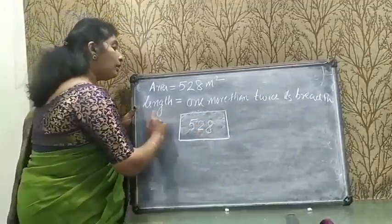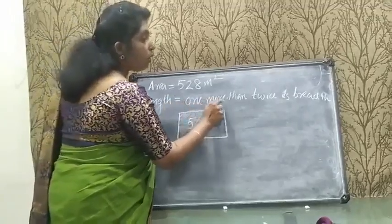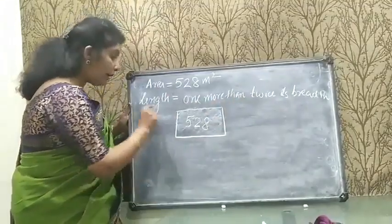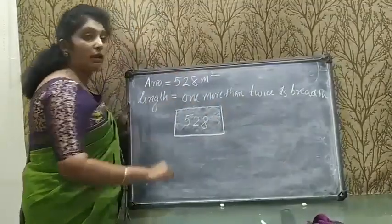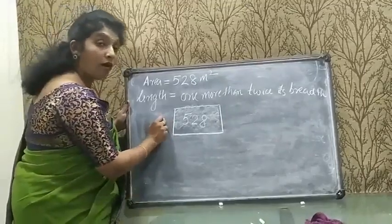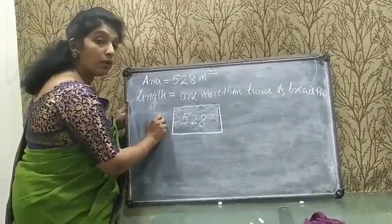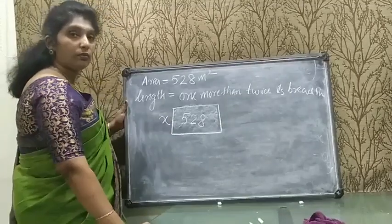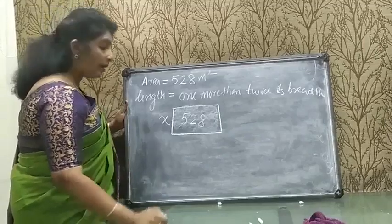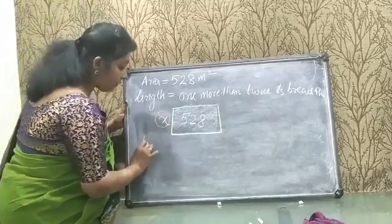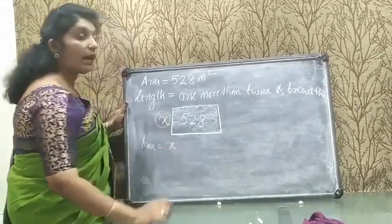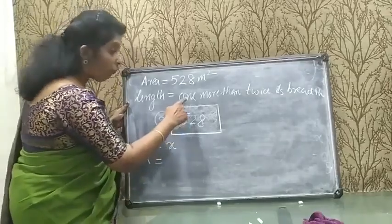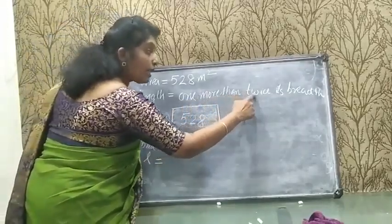The length is 1 more than twice the breadth, which means the length depends on the breadth. So first of all, I will assume the breadth. If the breadth is x, then the length equals — see the condition — 1 more than twice its breadth.